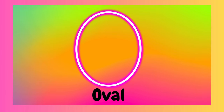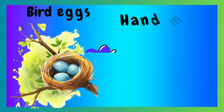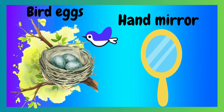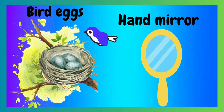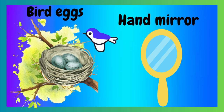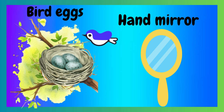This is an oval. Can you say oval? An oval looks like a long circle. Let's look at some examples of an oval. Here we have three bird eggs — they're all in the shape of an oval. And we also have a hand mirror. Can you see your amazing self inside?